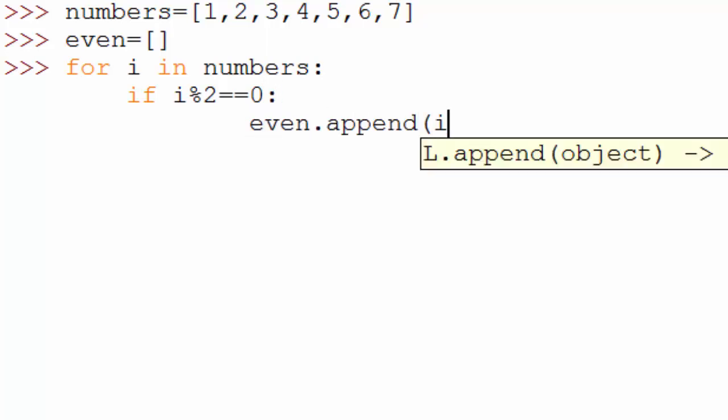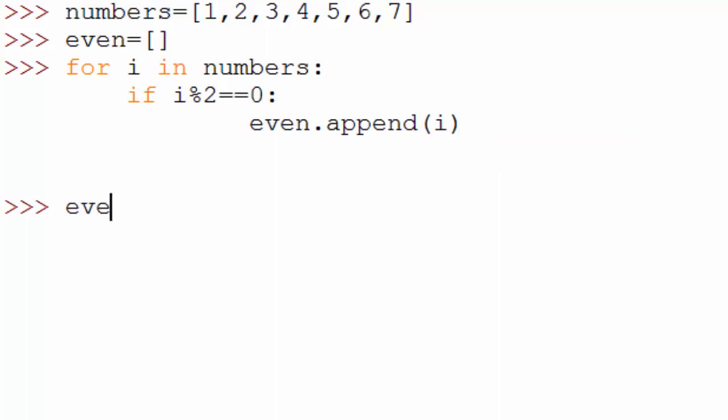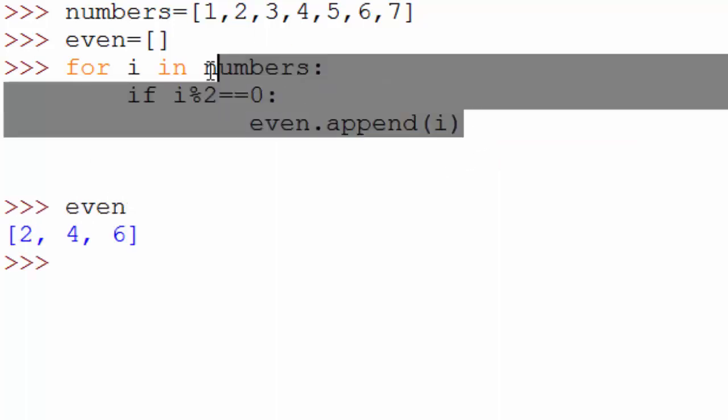Using a traditional for loop you will do something like this. You will just iterate through your original list and you will check if a number divided by two is a zero remainder then you will just append that to a new list and that works. But here you're writing three lines of code.